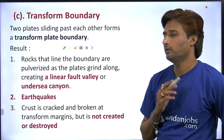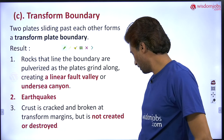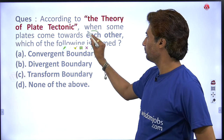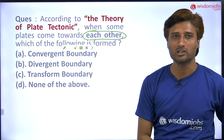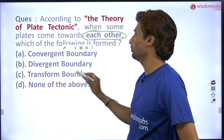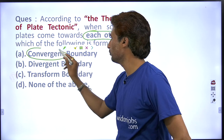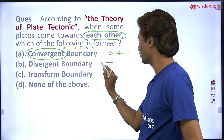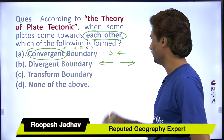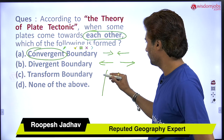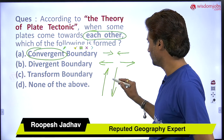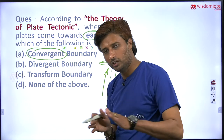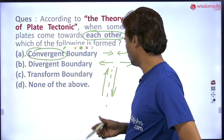This is the difference between all three boundaries. Our question was: according to the theory of plate tectonics, when some plates come towards each other, which boundary forms? It is convergent — coming towards each other forms convergent; divergent — going away; and transform — one moving this way and another moving the other way, with grinding at the margins.